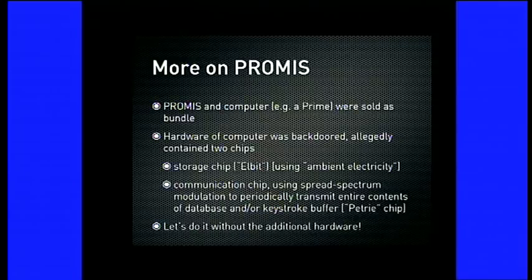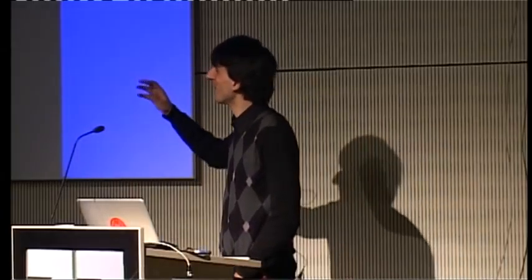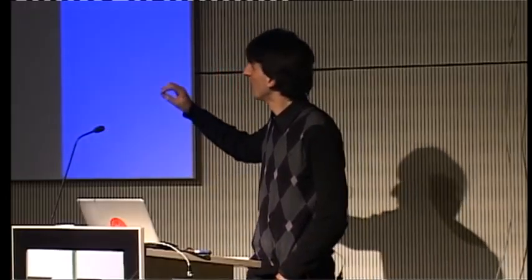PROMIS was sold together with a computer. The software back in those days came with a computer, and this was a Prime. Those were gorgeous little beasts, but they had a horrible operating system. What happened, allegedly, was that the Primes that they sold together with the software contained two additional chips. There was a storage chip called the L-Bit, and this used something called ambient electricity. Supposedly, it used the remaining leakage from capacitors, even when your computer was off, to store data for you. There was a communication chip which used spread-spectrum modulation to modulate out the entire contents of the database and keyboard buffer. This was called the Patriot chip.